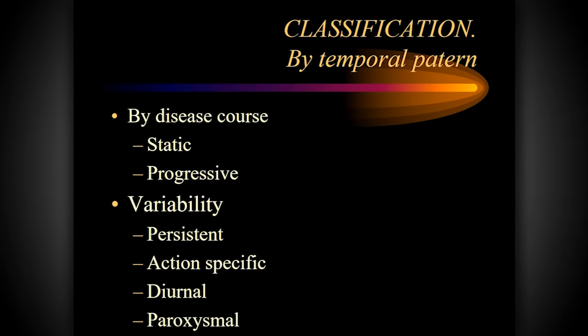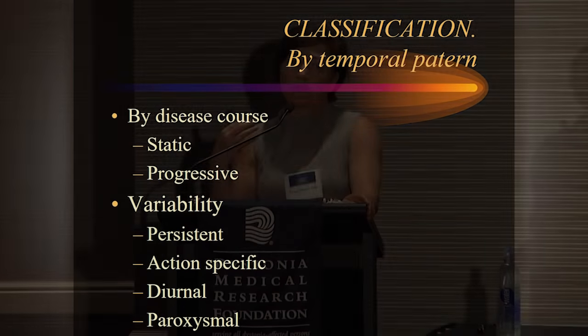We also describe dystonia by progression of symptoms — collecting points to put the puzzle together. A static course means symptoms have never progressed; a progressive course means they have worsened over time. Variability is also important: dystonia is very much action-induced. When someone is sitting resting, there may be much less symptoms, but when they start moving, the dystonic symptoms appear. That is the nature of dystonia.